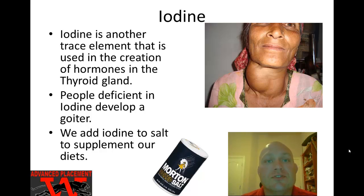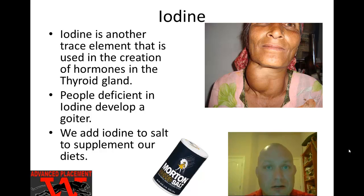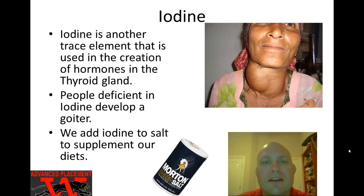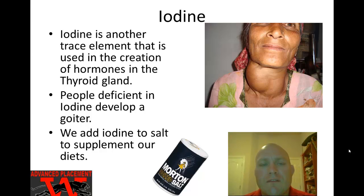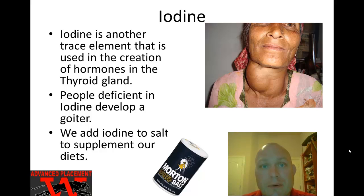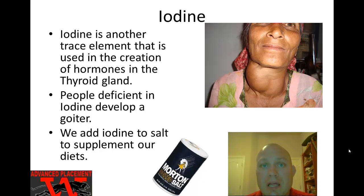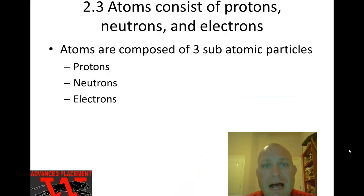Trace elements are just as important. A great example of a trace element is iron — it only makes up about 0.004% of your body weight, which is four one-thousandths of one percent. And yet without iron, you can't make the molecule hemoglobin. Without hemoglobin, you can't transport oxygen through the blood to the cells and tissues. So iron, even though it's only needed in small amounts, is very, very important.